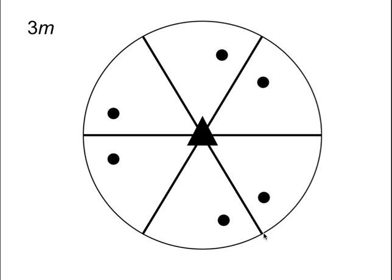Now, supposing that I place a point at an arbitrary location inside a cell with this point group symmetry. An arbitrary location means there is no particular symmetry element passing through it apart from a monad — a monad is just a one-fold rotation axis, it does not do anything. So if I place a point at a location with just a one axis passing through it, the operation of the triad will produce three points and the mirror planes will produce the other three. So if we place an atom at a location with site symmetry 1 in a cell with point group symmetry 3m, then we expect to see 6 of those atoms inside the cell.